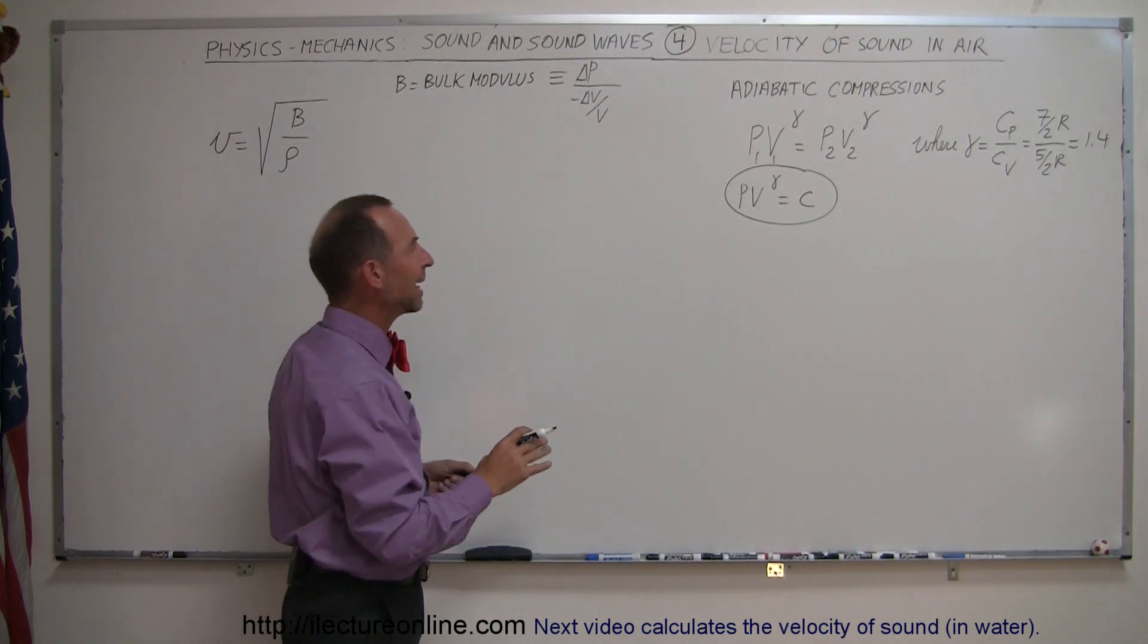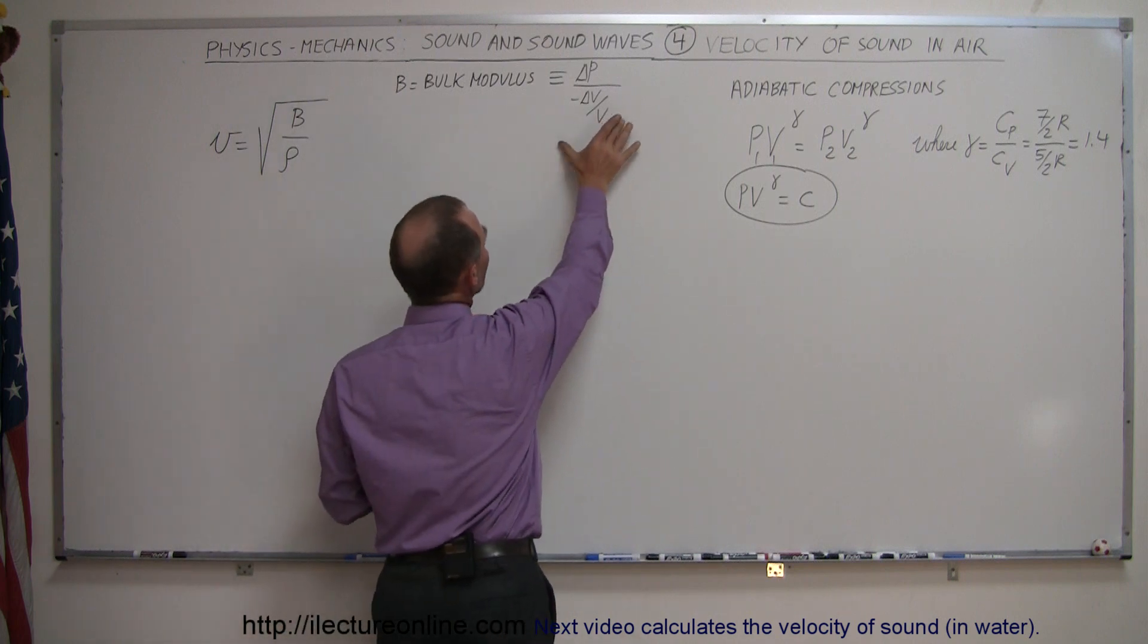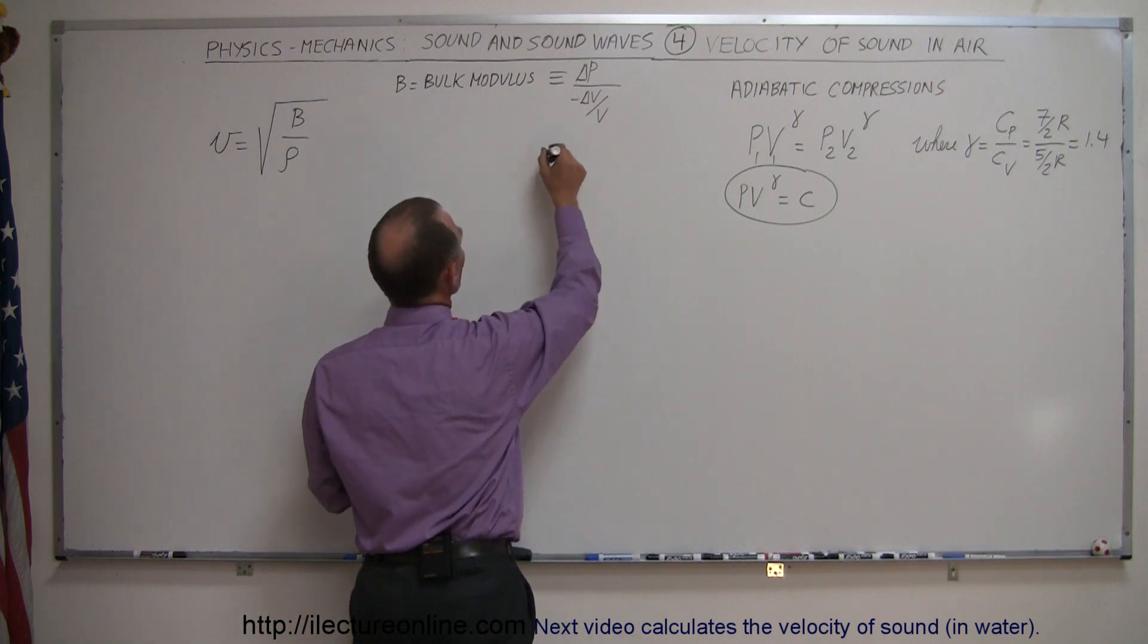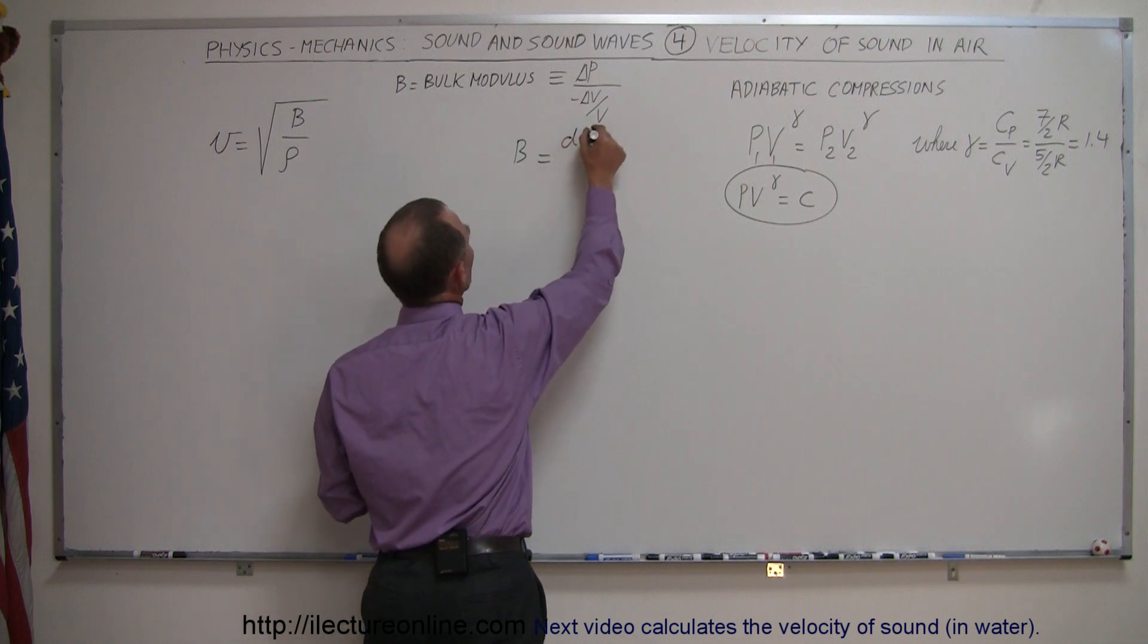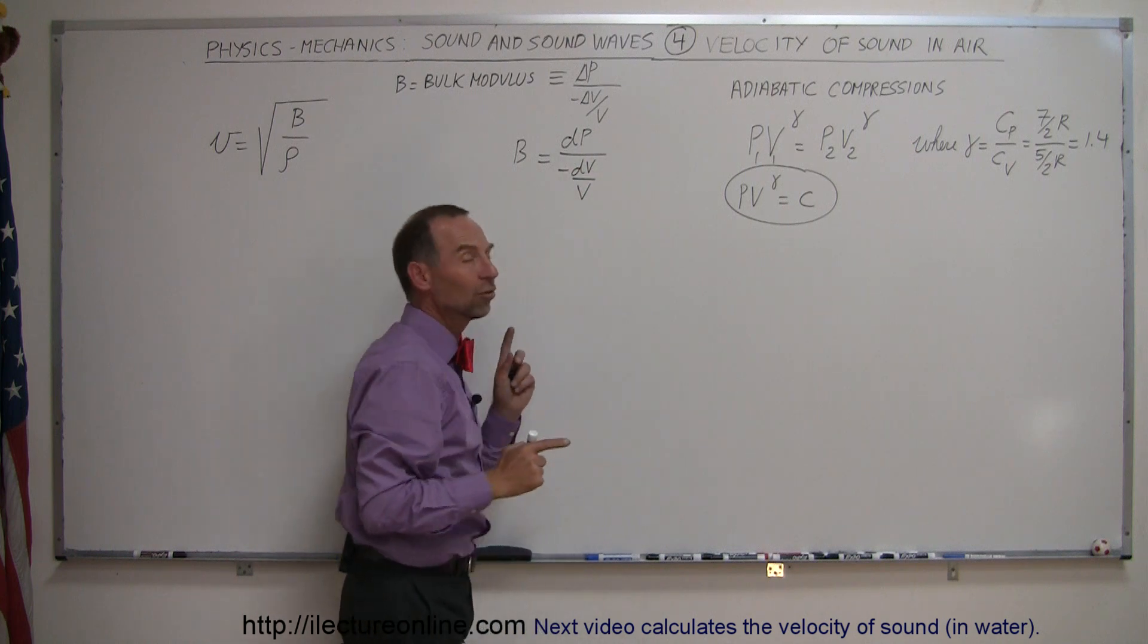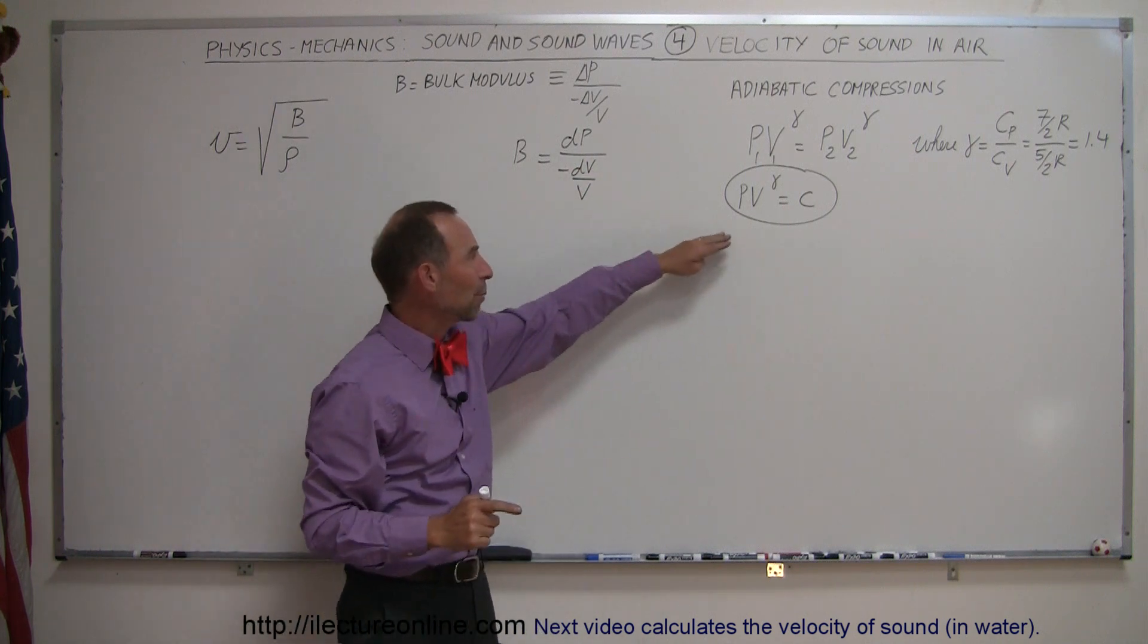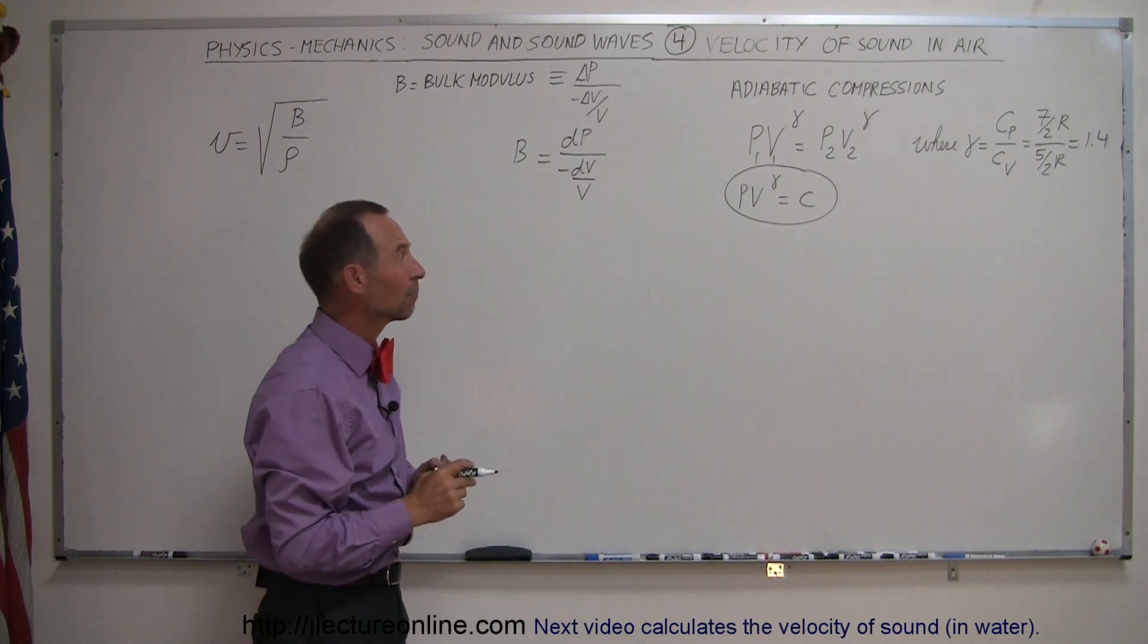If we now take the differential of both sides of that equation, what I want to do ultimately is put this into a differential equation so we can say that the bulk modulus is equal to the change in pressure divided by the ratio of the change in volume divided by the volume, and replace that by what we find in an adiabatic compression.